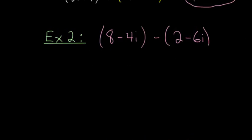But it's essentially going to work the same way. The only difference is that before I start combining anything, I want to distribute this negative to each of these terms. So I have 8 minus 4i, and then I have minus 2, and minus times minus 6i would give us plus 6i.